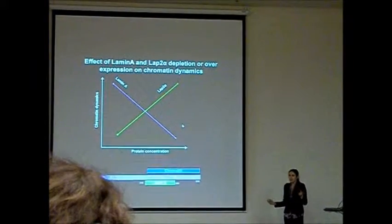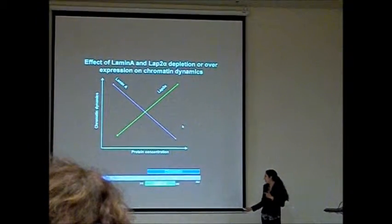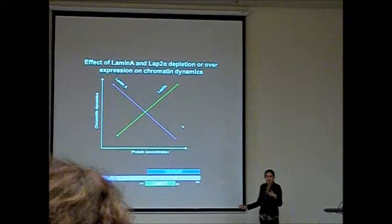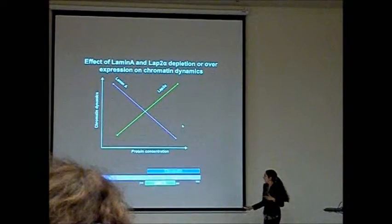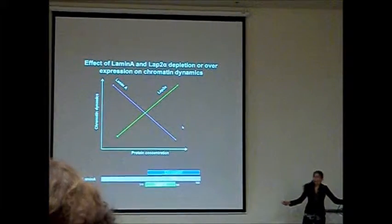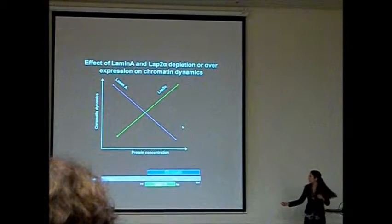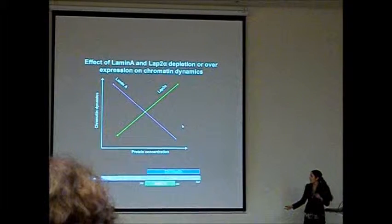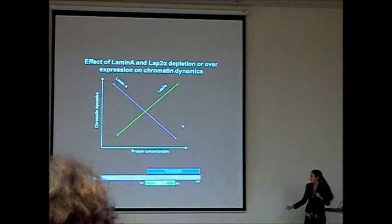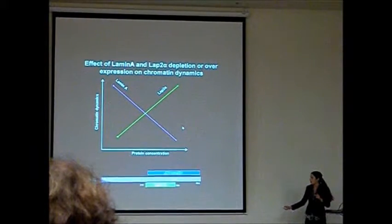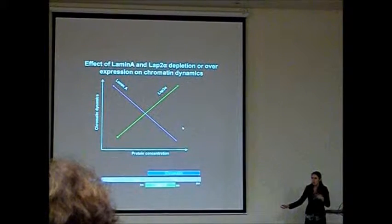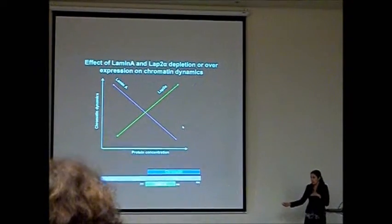So we suggested that maybe there is such kind of competition between LAP2-alpha and chromatin. Such kind of competition between LAP2-alpha and chromatin. So in case when we have LAP2-alpha, lamin A will bind mostly to LAP2-alpha and less to chromatin. So chromatin will be more free to move and in the opposite way.